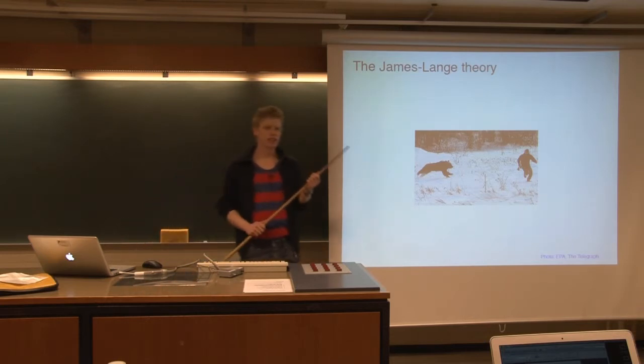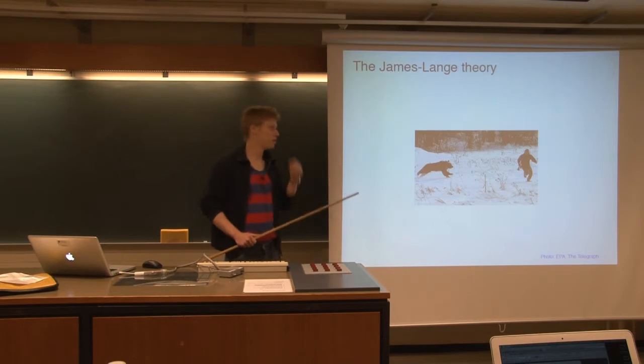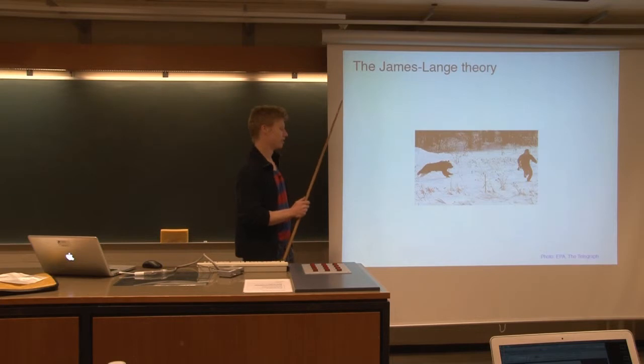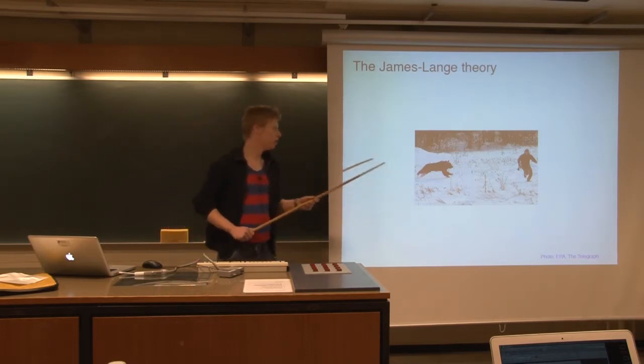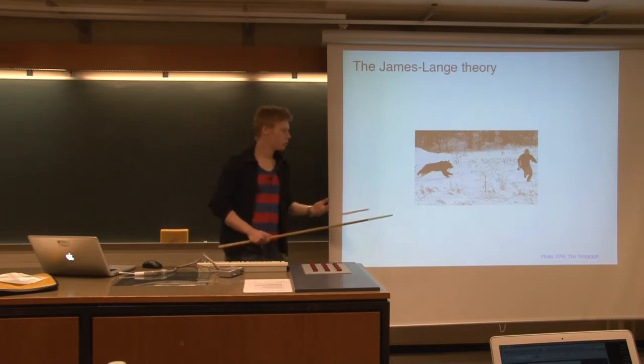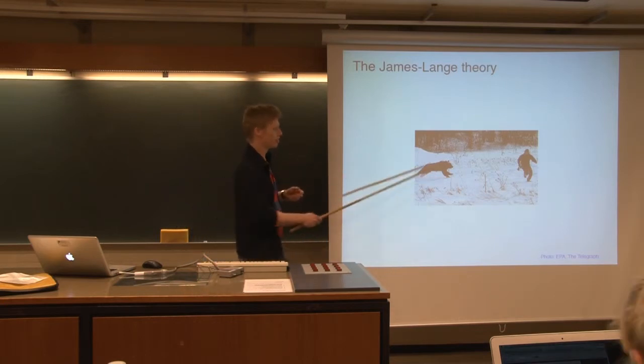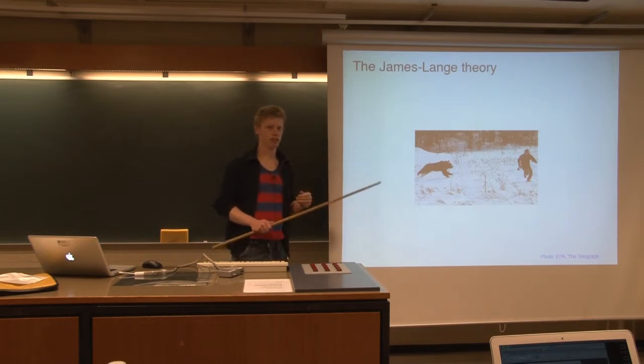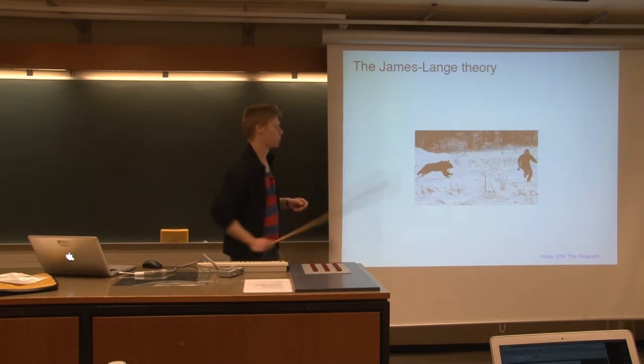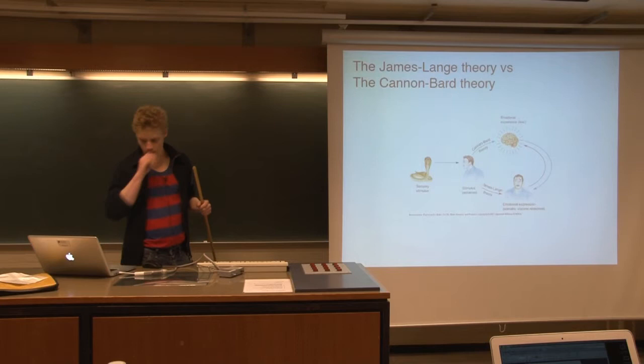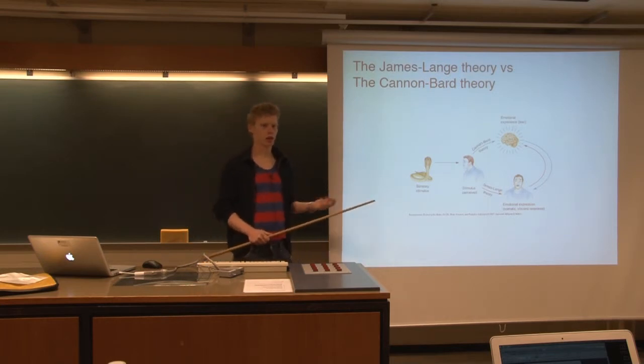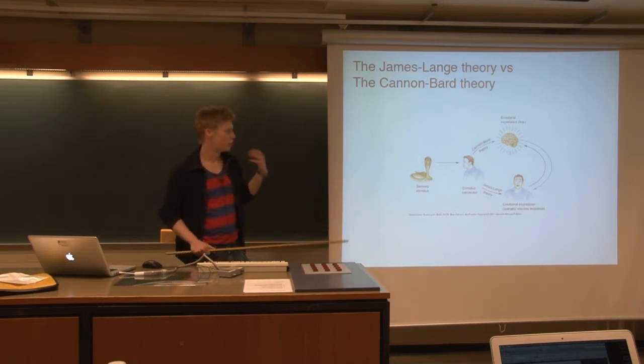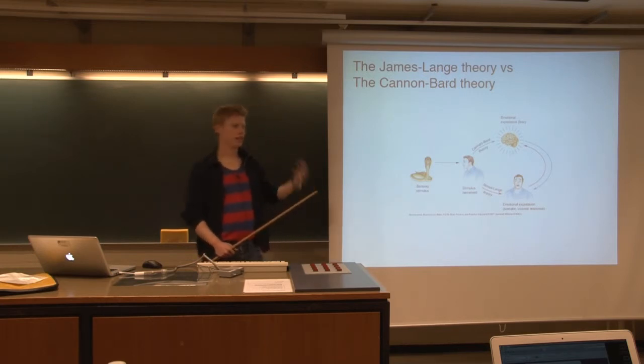Around 1890, American psychologist William James and Danish psychologist Carl Lange independently proposed a theory suggesting that emotions don't arise from brain states but from bodily responses. In the case of a bear, you become afraid because you start to run, not the other way around. This was a great debate in the early 20th century. Later, Cannon and Bard criticized this theory, noting that there are cases where physical actions don't necessarily elicit emotions.